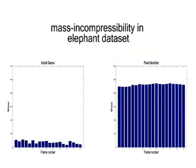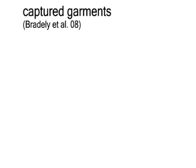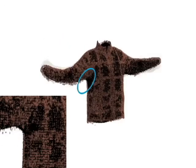This diagram demonstrates the incompressibility principle of our system. The mass initialization is shown on the left. The right-hand side shows the last iteration, where the actual mass is propagated evenly across all frames. We now show additional results of our flow system applied to real dynamic scans.